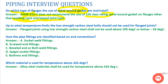The next question is: up to what temperature limits should low strength carbon steel bolts not be used? Flange joints using low carbon steel shall not be used above 200 degrees Celsius or below minus 28 degrees Celsius. This is the temperature range outside which we should not use low strength carbon steel bolts.